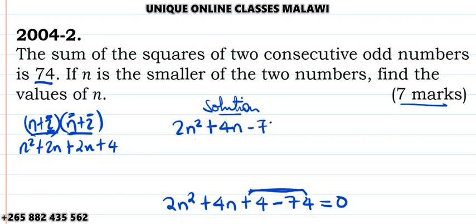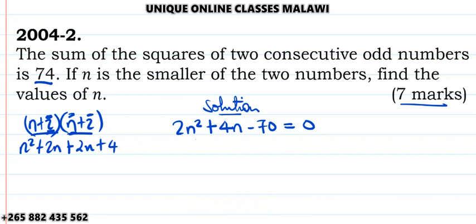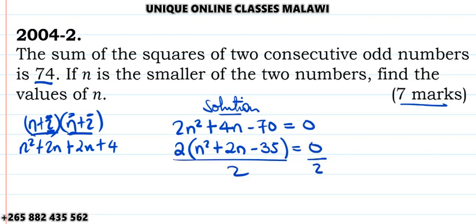This equals 74. We can combine like terms: 2n² + 4n + 4 - 74 = 0. That's 2n² + 4n - 70 = 0. We can simplify by dividing everything by 2: n² + 2n - 35 = 0.